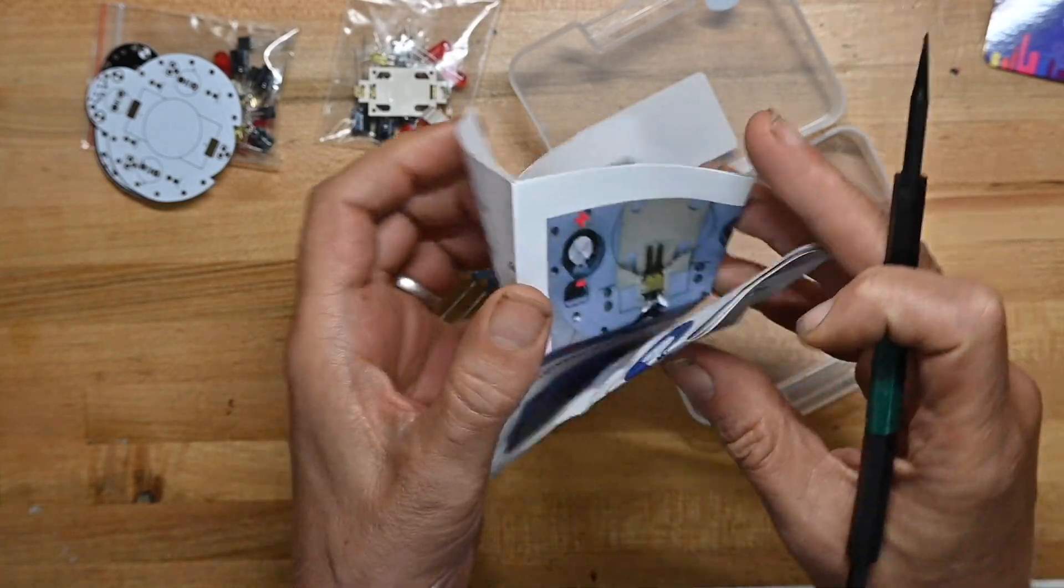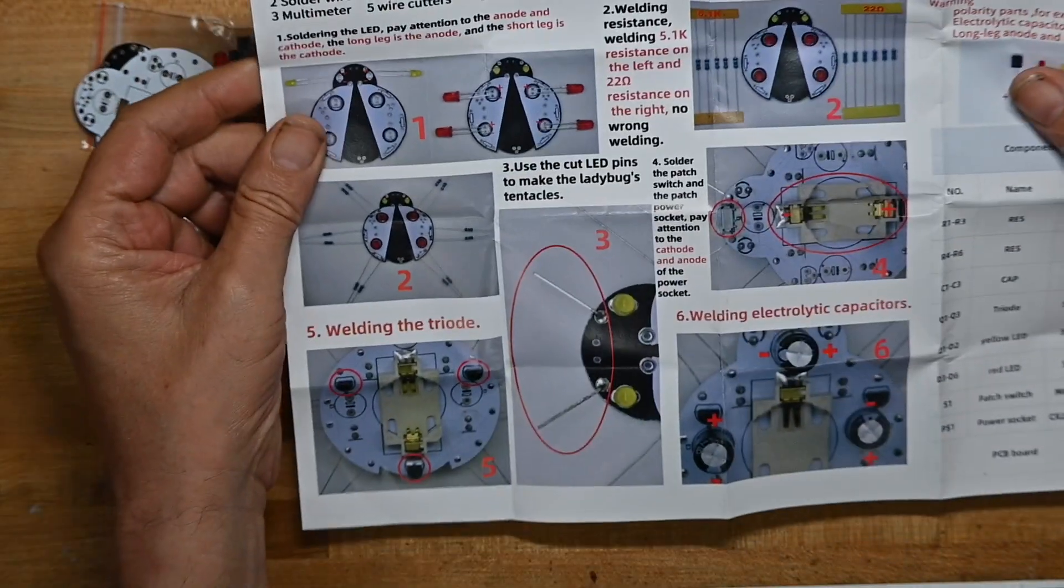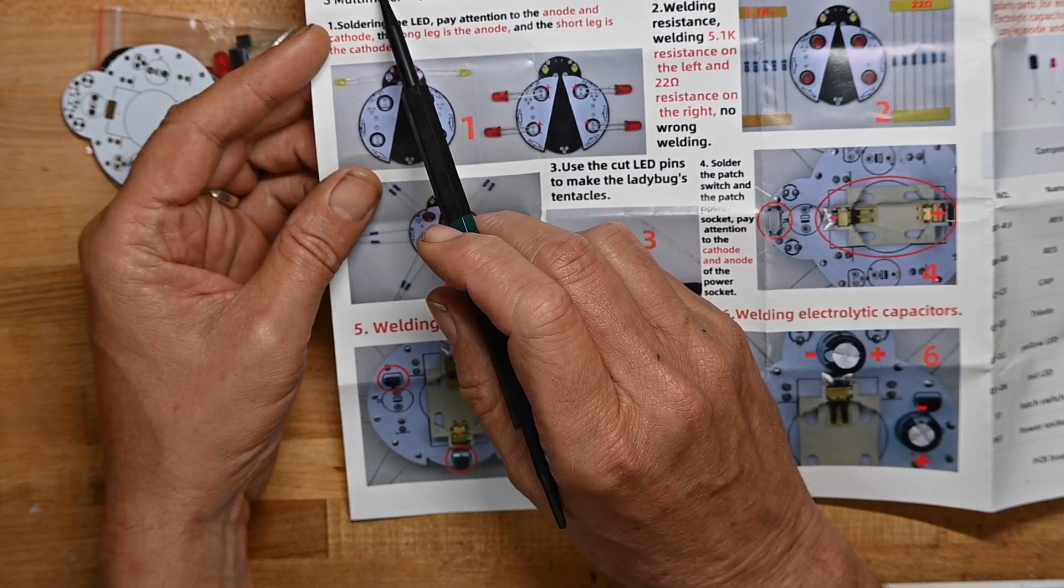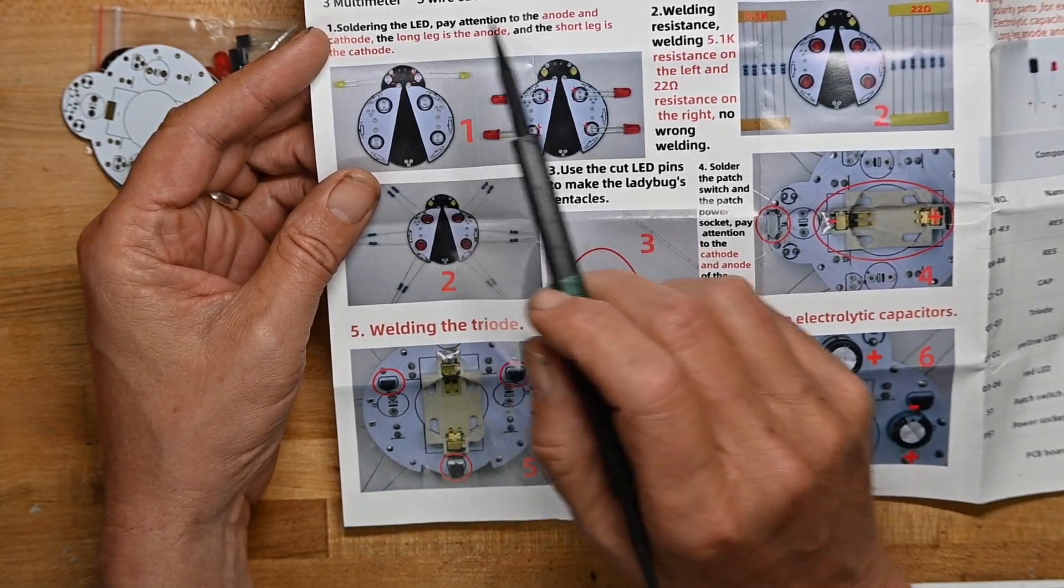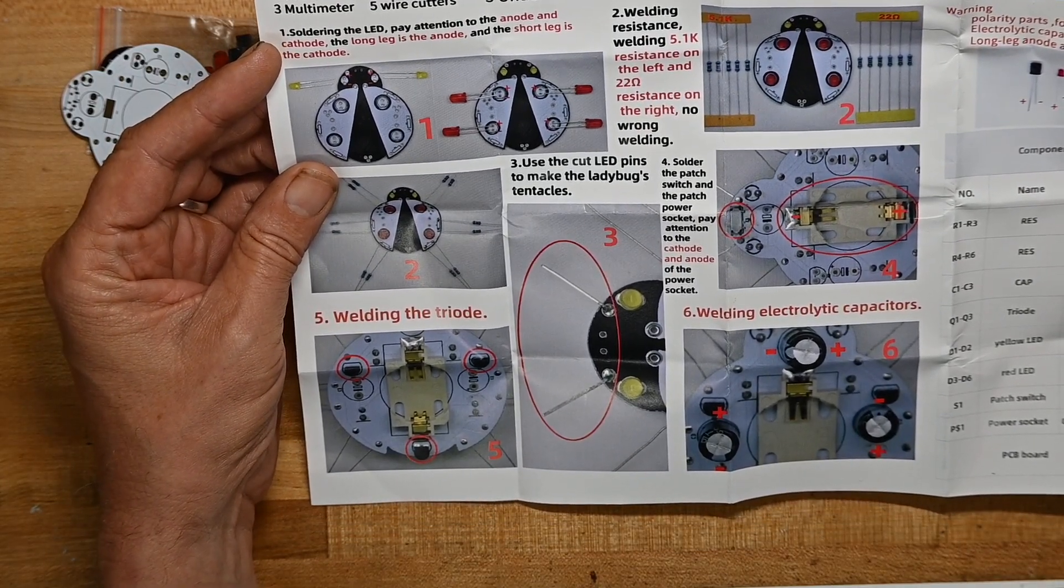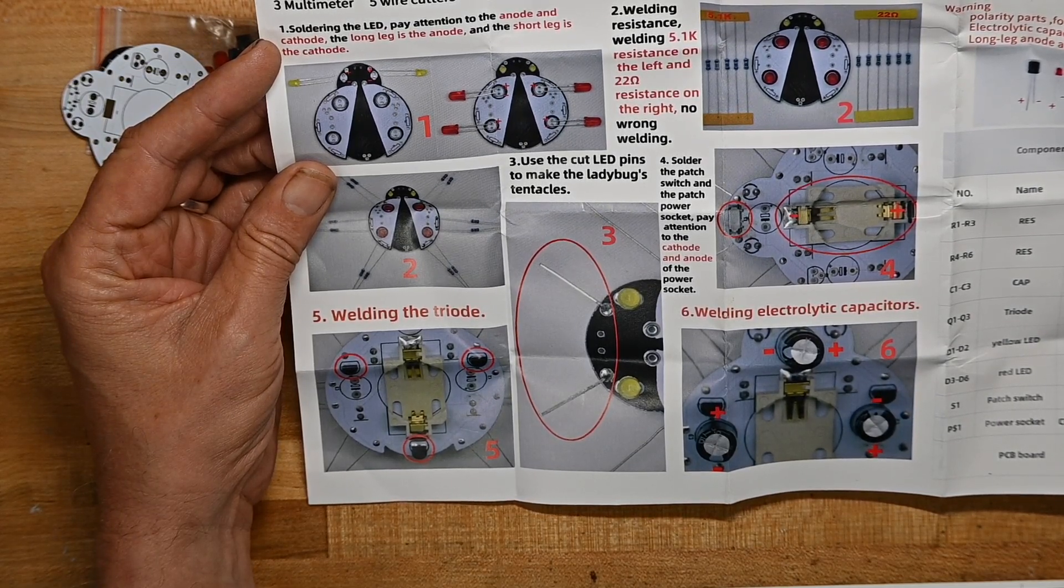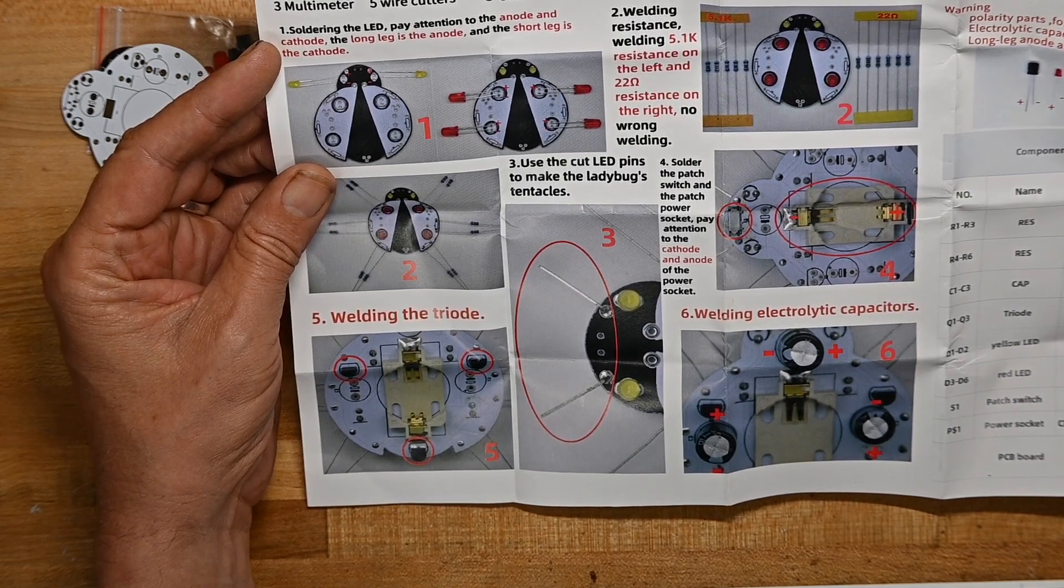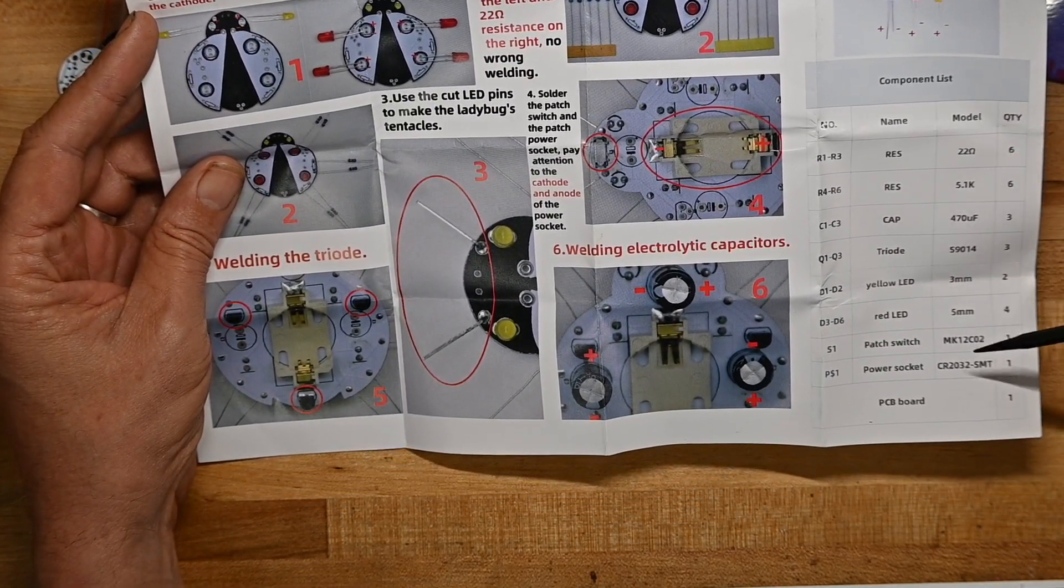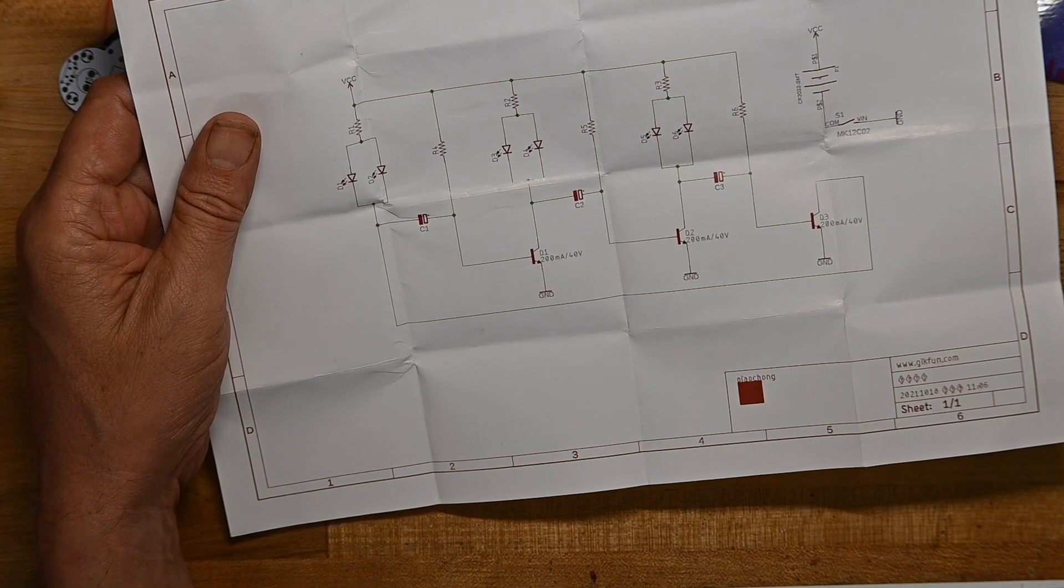And then a little piece of paper. GeekFun is usually good about their instructions. And they do a great job of putting lots of pictures. You need a 30-watt soldering iron or better, multimeter, wire cutters, tweezers, and always meter resistor values before soldering. I guess they're a little worried about their quality control on the resistors they buy. Nice little component list. And on the back, a nice little schematic showing you how it all works.